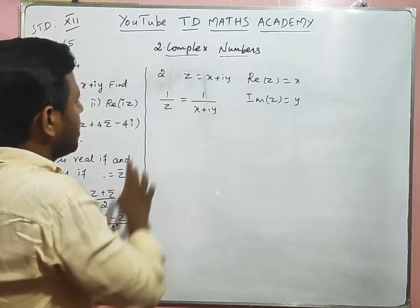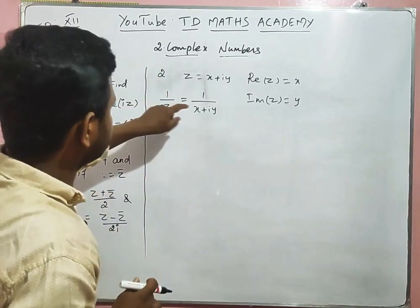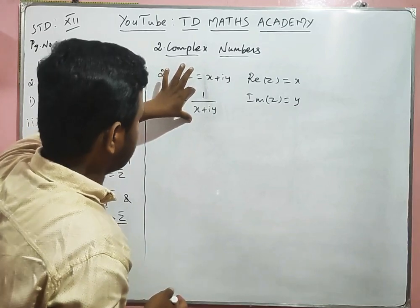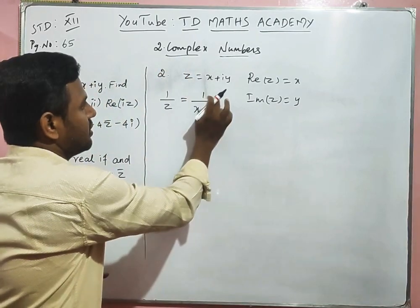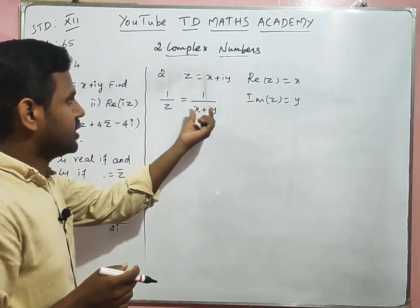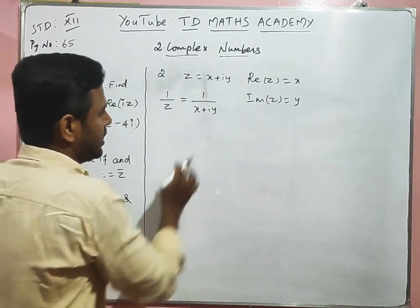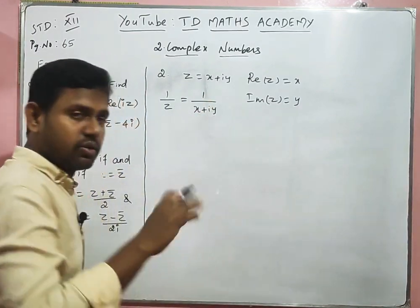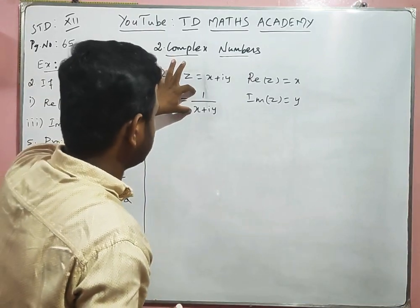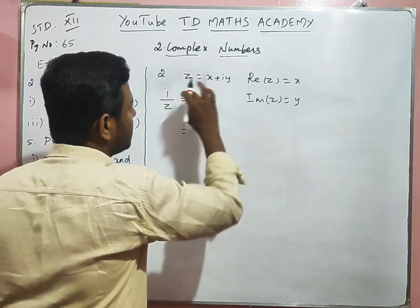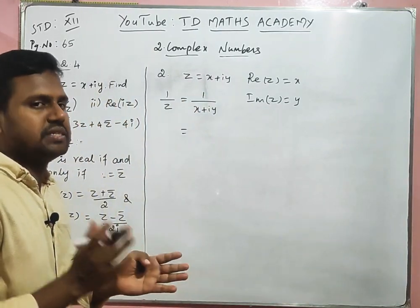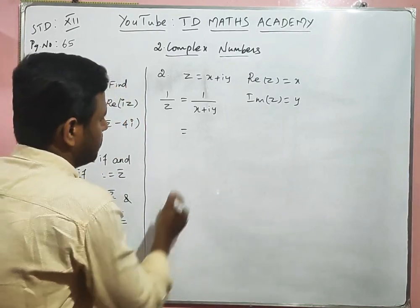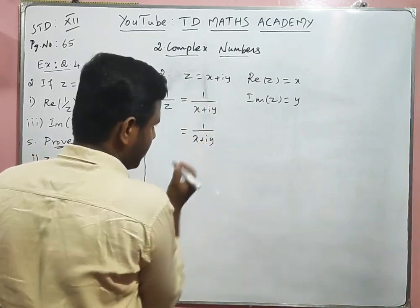We need to find 1/z in rectangular form. 1/z = 1/(x + iy). This is not yet in rectangular form, so we cannot directly identify real and imaginary parts. To divide two complex numbers, we take the conjugate of the denominator and multiply with both numerator and denominator.